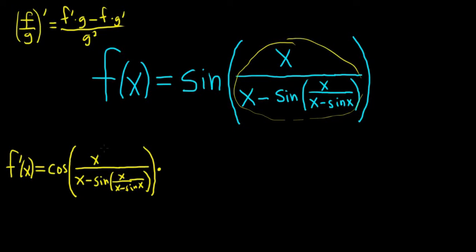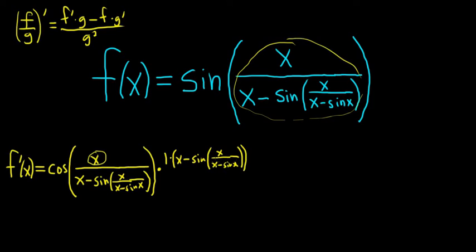So now we're going to use the quotient rule on this piece here. We're going to be really, really careful. The derivative of the top is the derivative of x, which is just 1, times the bottom — so parentheses, x minus the sine of x over x minus the sine function. Then we close the parentheses, and we did the derivative of the top times the bottom piece minus the top piece times the derivative of this bottom piece here.